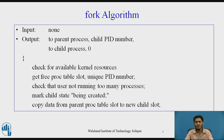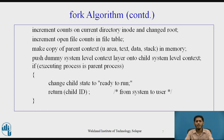Now what are the steps in the fork algorithm? First, it checks for available kernel resources. Then it gets a free process table slot and a unique PID number. It checks that the user is not running too many processes and marks the child state as being created. Then it copies the data from the parent process table slot to the new child slot. Then it increments the counts on the current directory inode and the changed root, and increments the open file counts in the file table. Then it makes a copy of the parent context — that is, u-area, text, data, stack, etc. in memory. Then it pushes a dummy system-level context layer onto the child system-level context.